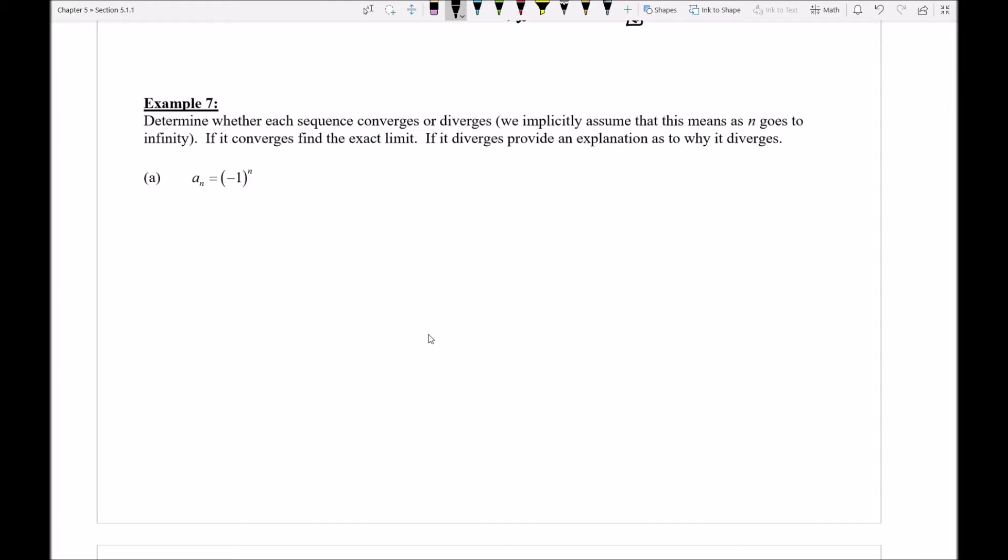Let's take a look here at this first part with a sub n being negative 1 to the nth power. Well quickly here I'm going to go ahead and just observe that what I'm really dealing with here is a sequence that goes negative 1, positive 1, negative 1, positive 1, negative 1, positive 1, for the rest of time.